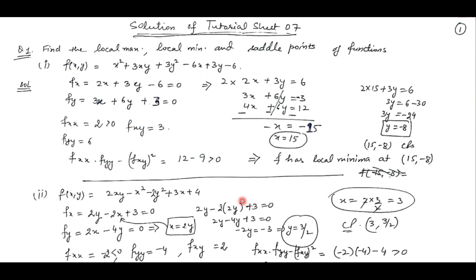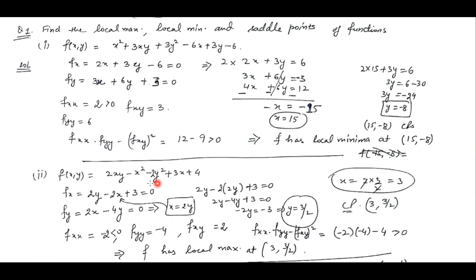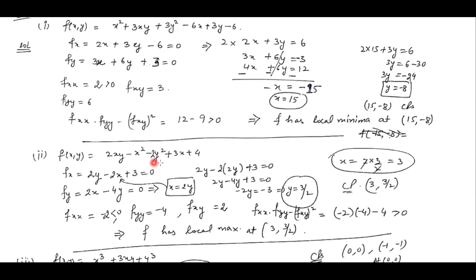Similarly, we will do the second part. Here also we are given a function of two independent variables. First we find out the partial derivatives, put them to be 0. We get a critical point which is (3, 3/2). Now using the second derivative test, we check the second order partial derivatives and the discriminant. Here the discriminant is positive and f of x, x is negative, so this implies the function has local maxima at this point.